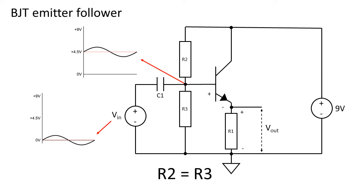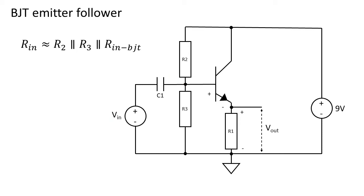So let's design a buffer for audio. At the input we want a high impedance to make sure that the audio source does not get loaded. The input impedance of this buffer is given as the resistance of R2 parallel to R3 parallel to the resistance looking into the base of the transistor.